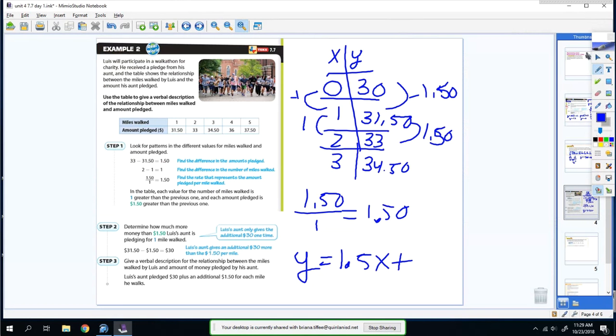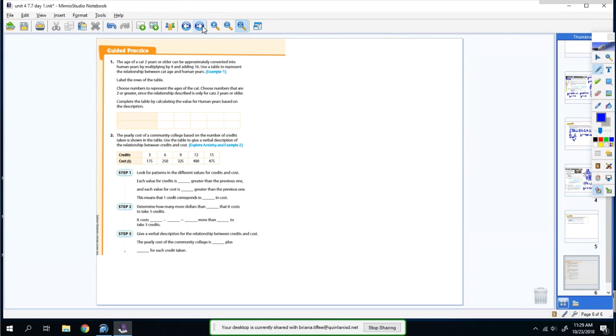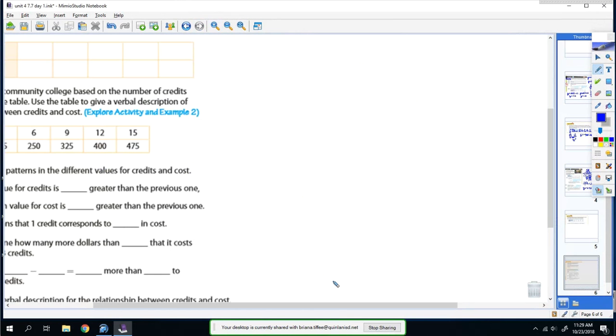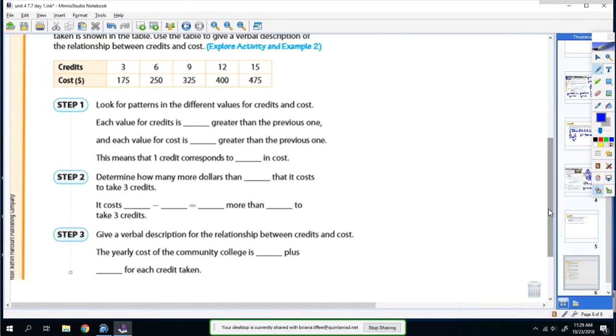So my equation would be y = 1.5x + 30. Alright, we're going to skip this and we'll go on to your practice at the very bottom. You can cross off steps 2 and 3.